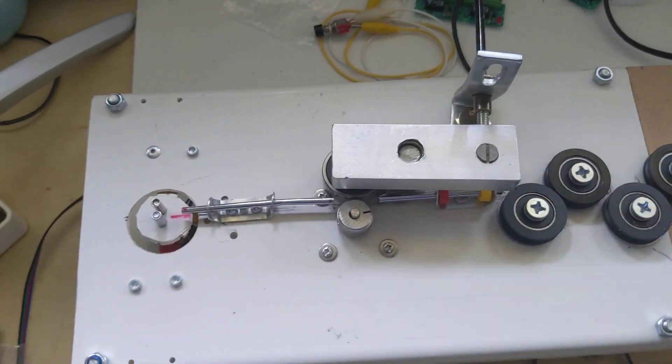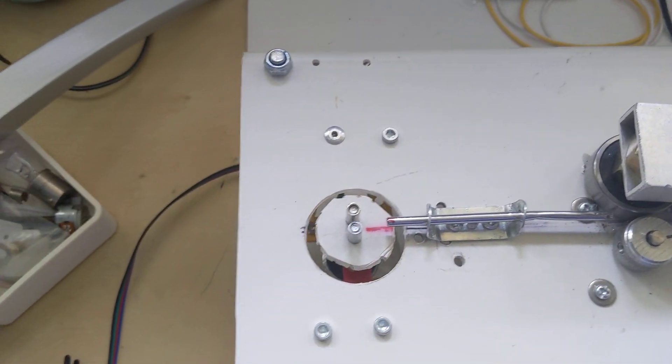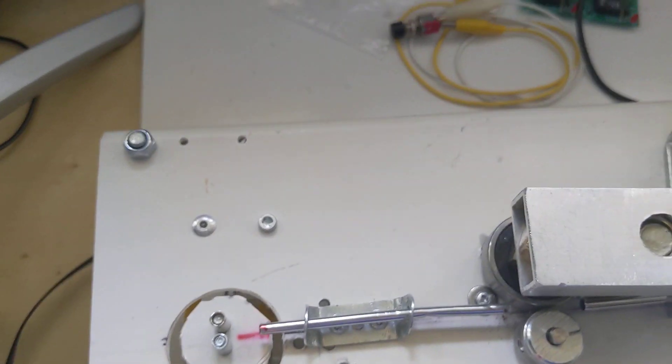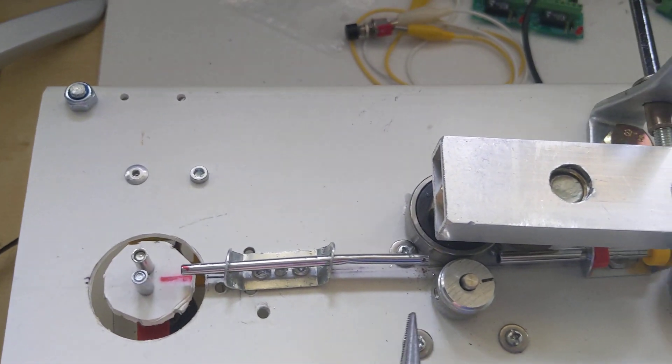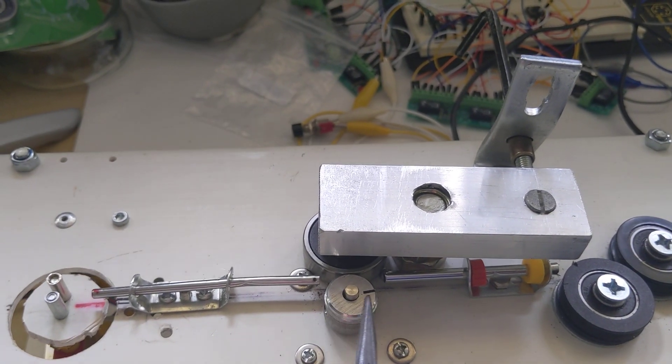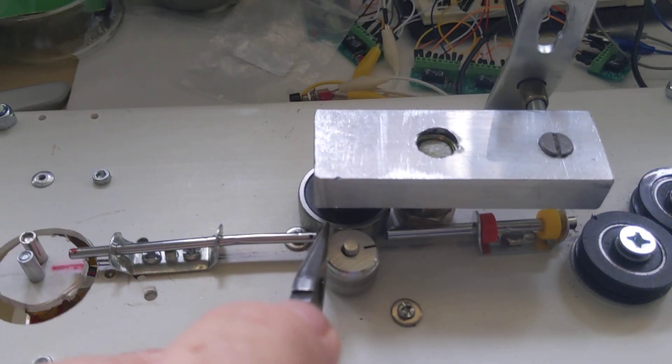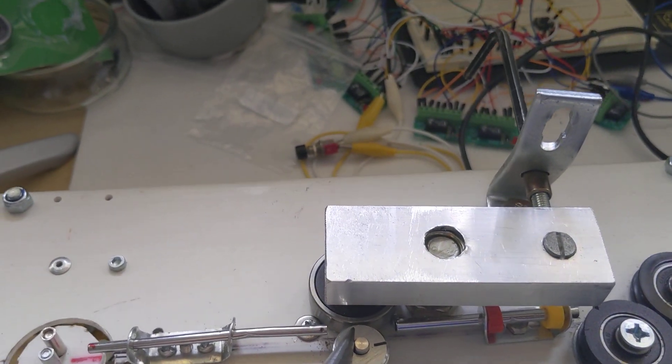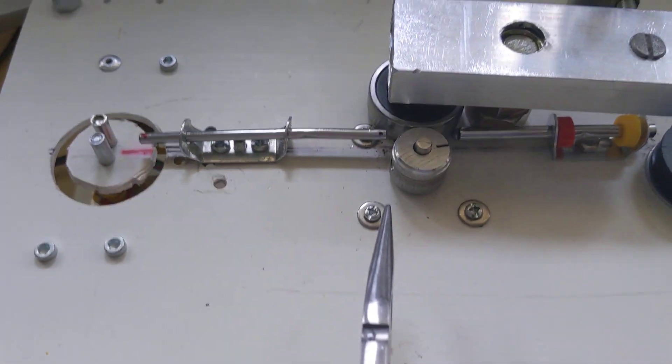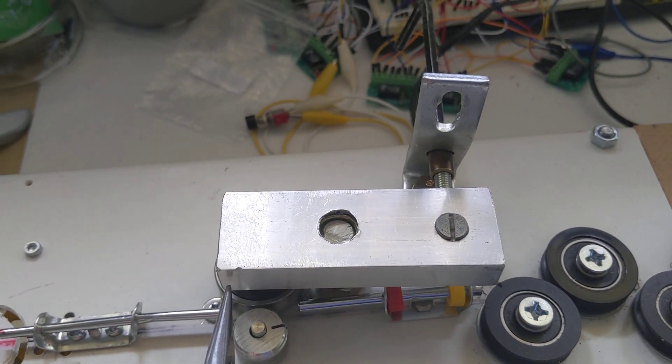So this bit here is the bending end. The wire comes through and gets bent. This part here propels the wire from right to left.